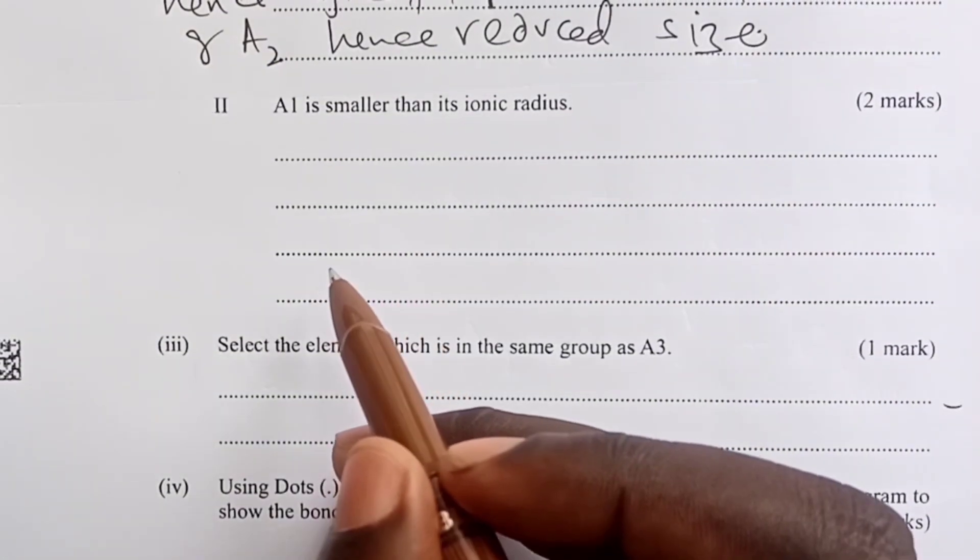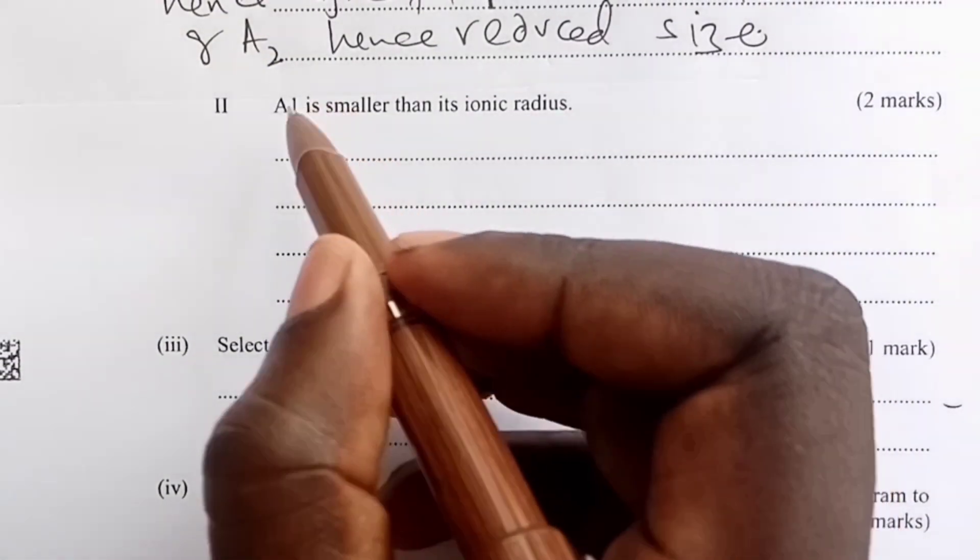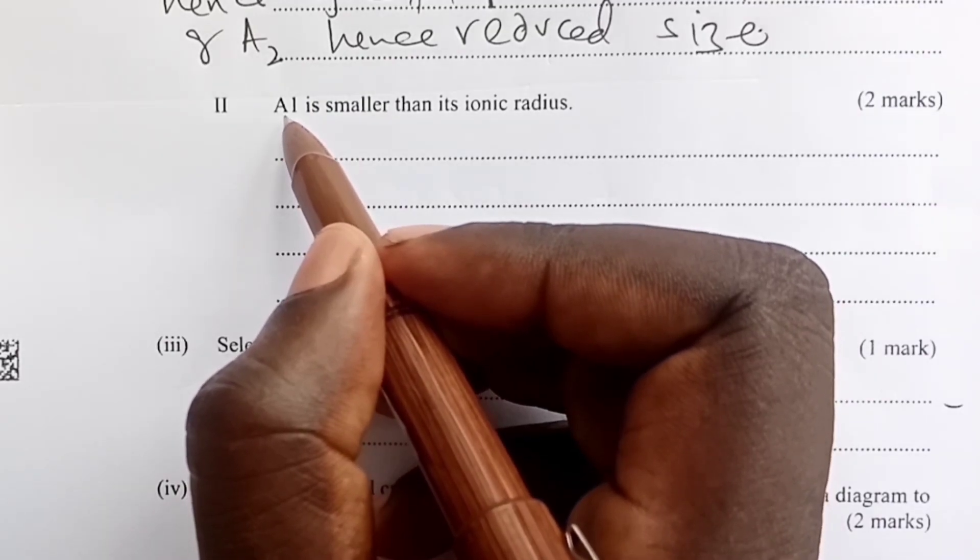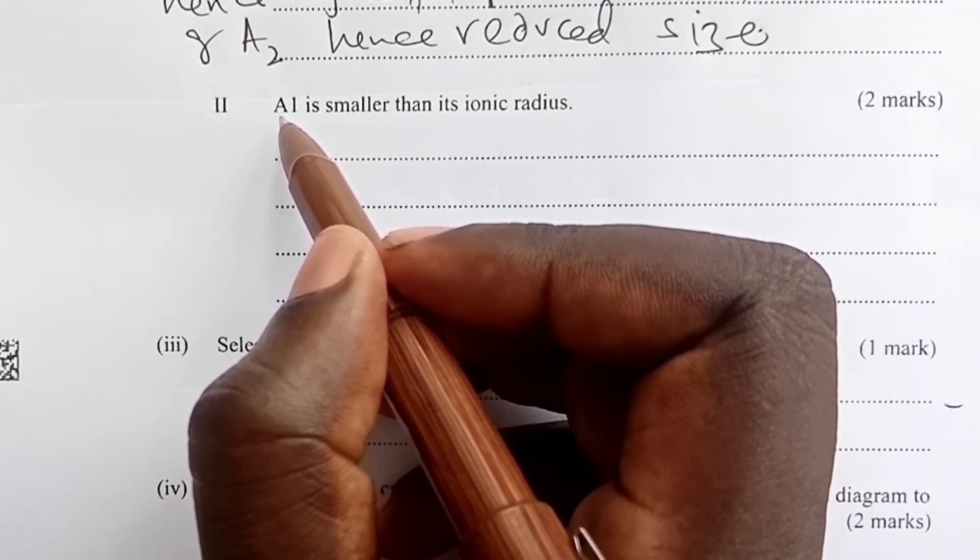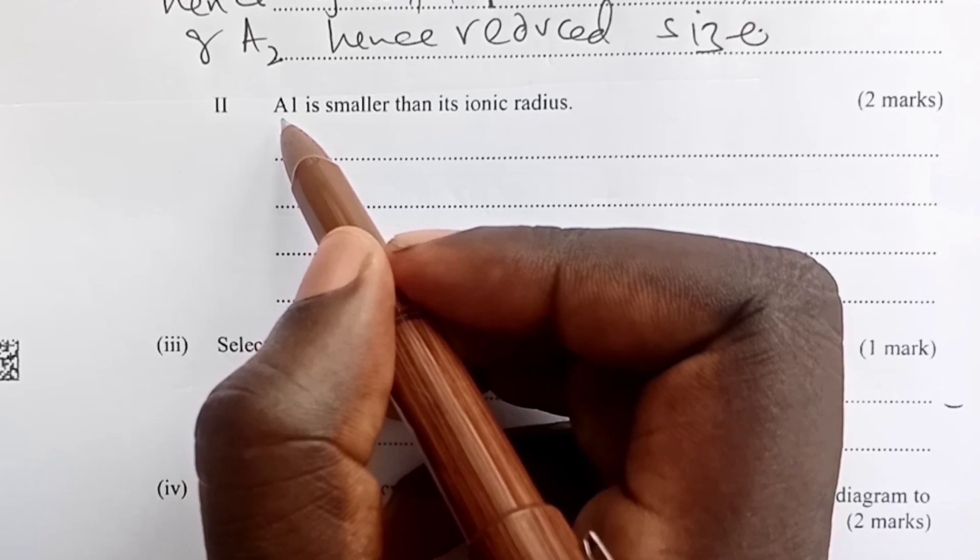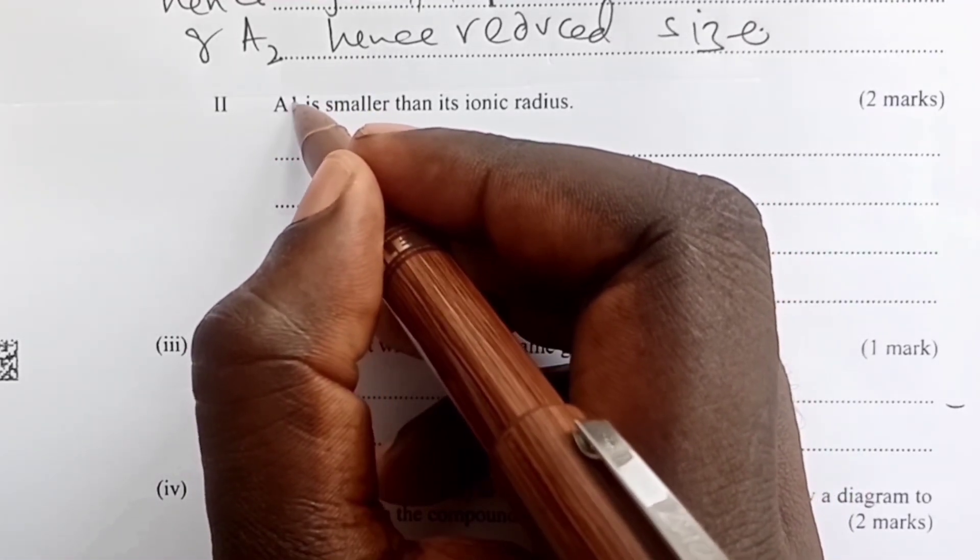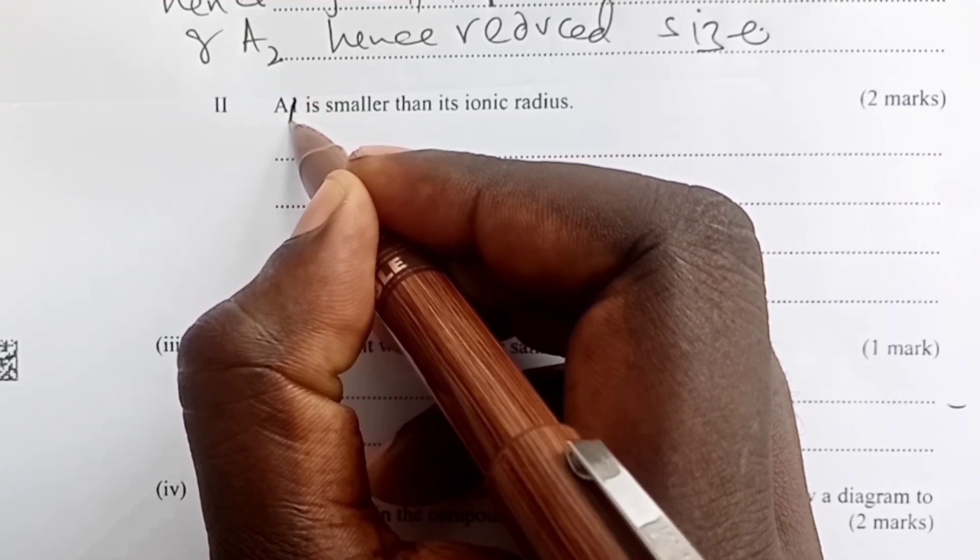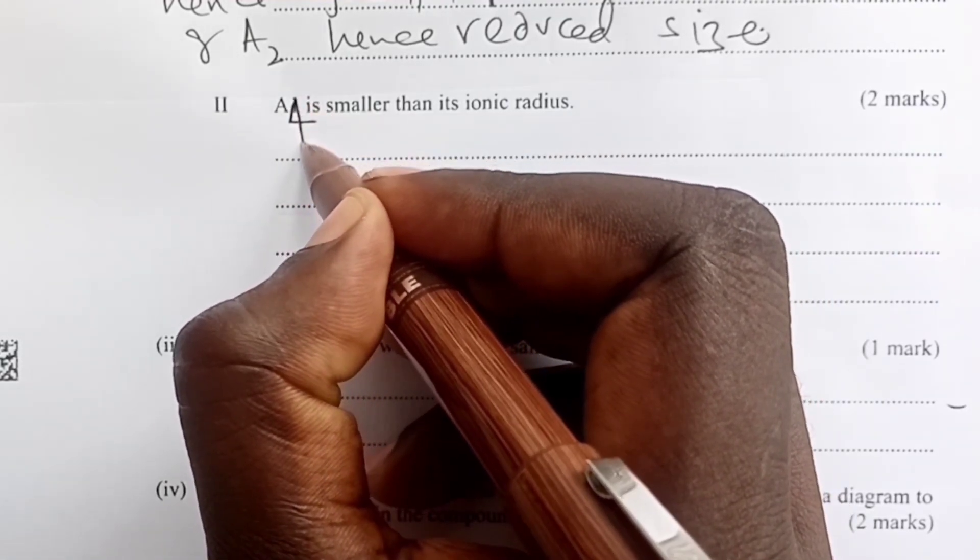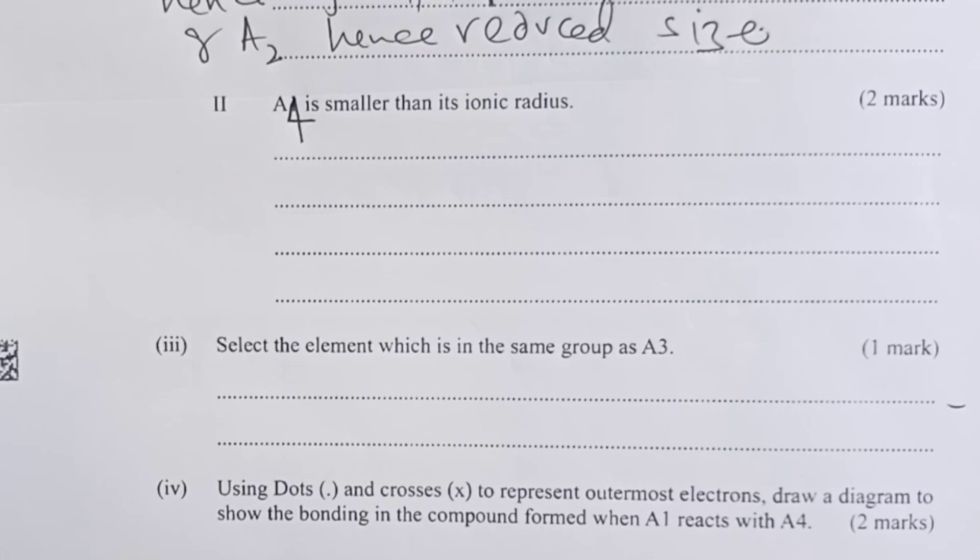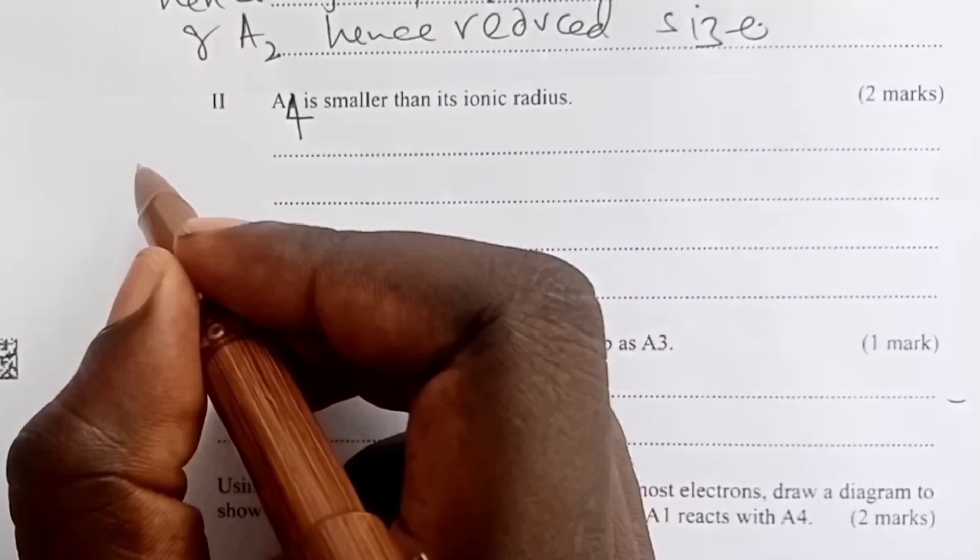Giving the reason and going ahead to explain would give the next mark totaling two marks. To the next question, there was a misprint because the only element that has a smaller atomic radius compared to ionic radius is A4. So here we shall change. It's not A1, it is A4. The atom of A4, as we have seen in the table, is smaller than its ion.